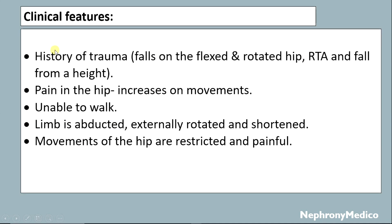Clinical features: there is a history of trauma with fall on the flexed and rotated hip, road traffic accident, or fall from a height. There is pain in the hip which increases with movements. The patient is unable to walk, and the limb is abducted, externally rotated, and shortened. Movements of the hip are restricted and painful.